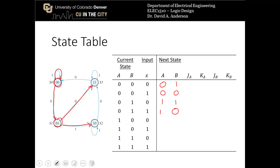When the current state is 10 and the input is 0, we transition to state 11. When the current state is 11 and the input is 0, we go to state 00. When the current state is 11 and the input is 1, we stay in state 11.